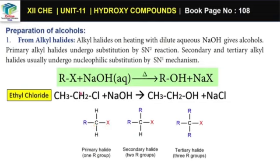Alkyl classification: 1° alkyl has primary halogen attached. 2° alkyl has secondary halogen attached. 3° alkyl has 3 alkyl groups, while secondary has 2 alkyl groups and primary has 1 alkyl group — this is the primary center.